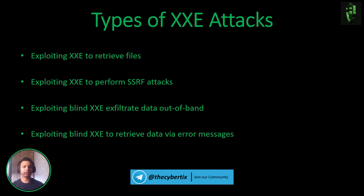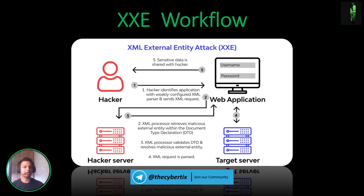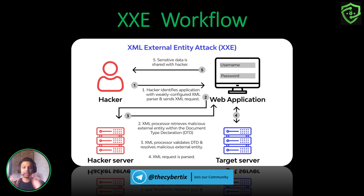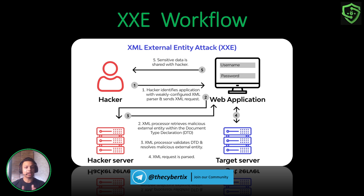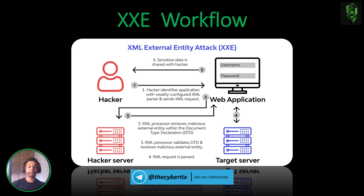Now let's understand the XXE workflow. First, the hacker identifies an application with a weakly configured XML parser and sends malicious data in an XML request. The web application checks the data structure (DTD), which loads a hacker's server. The XML processor retrieves a malicious external entity via the DTD declaration. The XML processor validates and resolves the entity. Then the XML request is parsed server-side, and the response goes back to the web application. Finally, the web application retrieves sensitive data that is shared with the hacker.